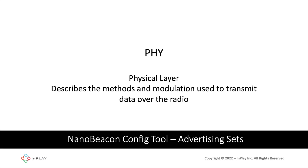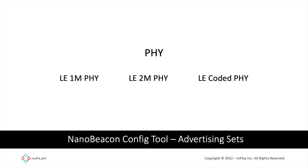The PHY refers to the physical layer and describes methods such as the modulation techniques used to transmit data over the air using the radio. In simple terms, the PHY selected determines the maximum transmission data rate and also impacts the operating range. In BLE, as of version 5.3 of the specification, there are three main PHYs: the LE 1M PHY, the LE 2M PHY, and the LE Coded PHY.